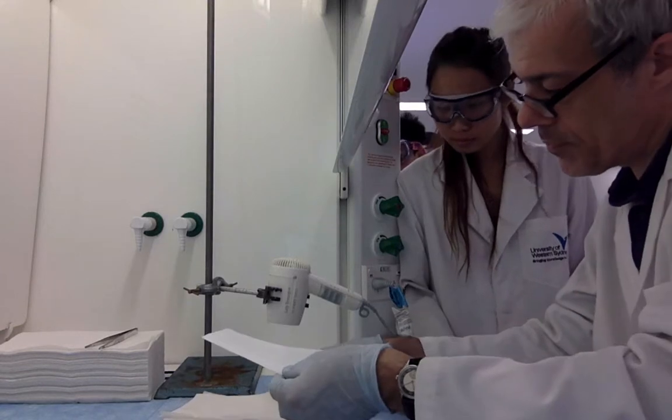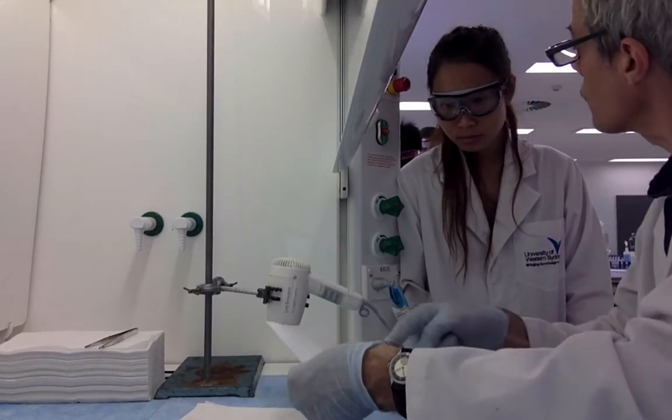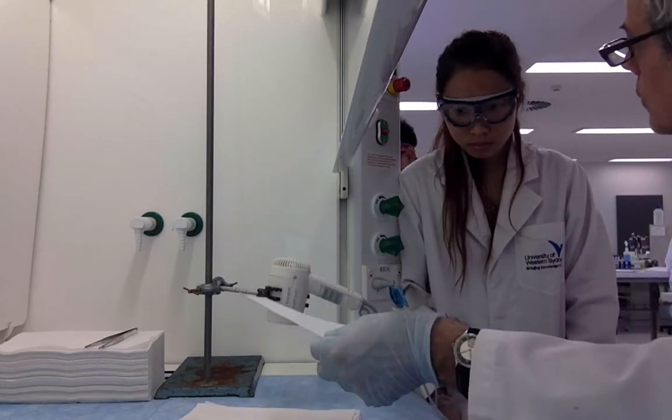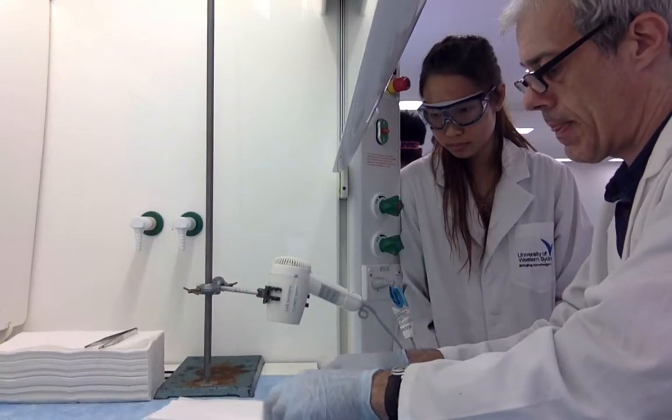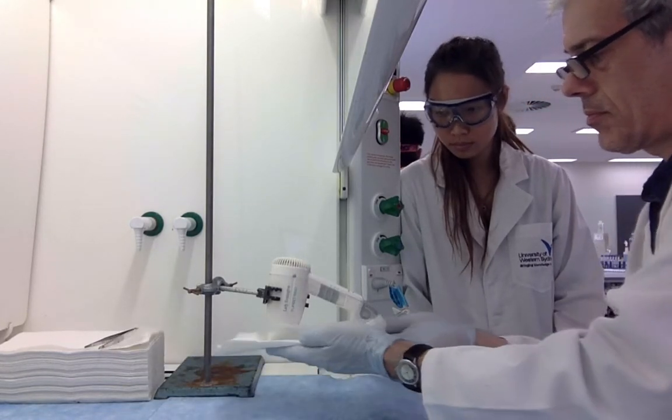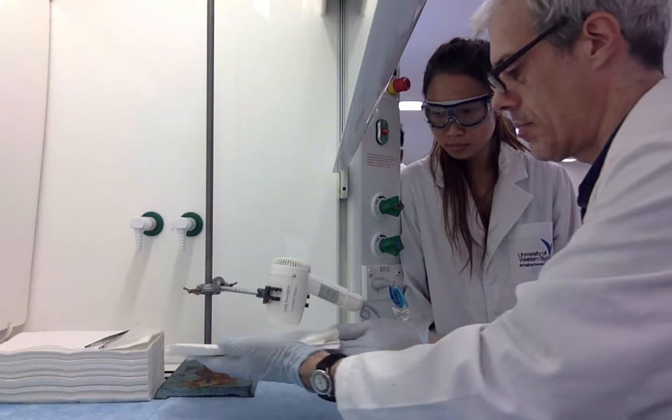Here we have a paper that's just been run so that the sugars have been drawn up through the paper through the capillary action of that solvent mix. And we're just drying off the solvents so that we can stain the sugars.